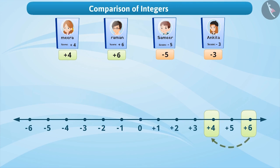Look at the number line. Meera's plus 4 is to the left side of Raman's plus 6. Plus 4 is less than plus 6, or since plus 6 is to the right of plus 4, plus 6 is greater than plus 4.